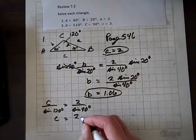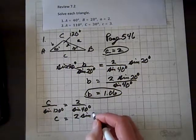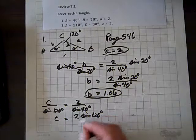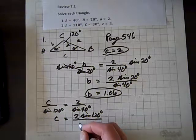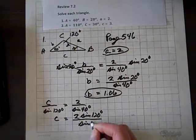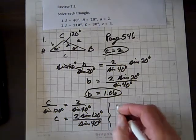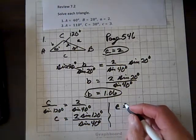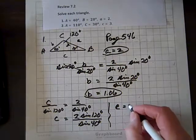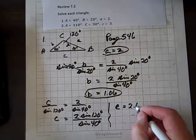So multiplying both sides by sine of 120 degrees, C equals 2 sine of 120 degrees over sine of 40 degrees. Running that through the calculator, I get 2.69.